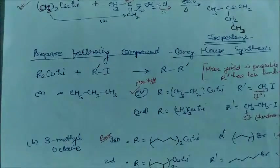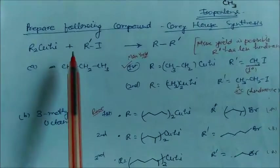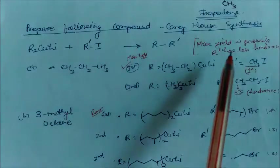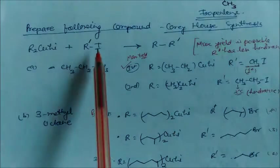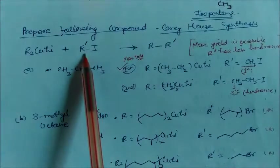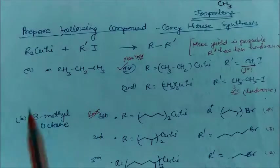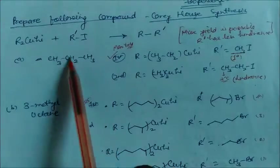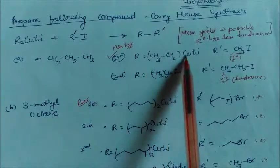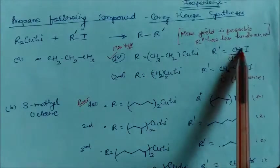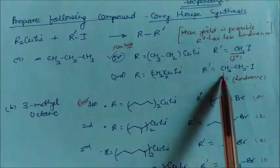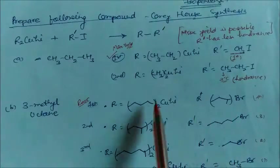Now we will see some examples of preparing compounds using Corey-House synthesis. Maximum yield is possible when R' has least steric hindrance. If R' has a less hindered carbon, we get the maximum product. With a tertiary alkane or bulky group as R', there will be less product. For example, for propane: if R is the longer chain and R' is taken as the methyl halide CH₃X (primary, least hindered), you get maximum yield. Taking a secondary alkyl halide as R' gives less yield.